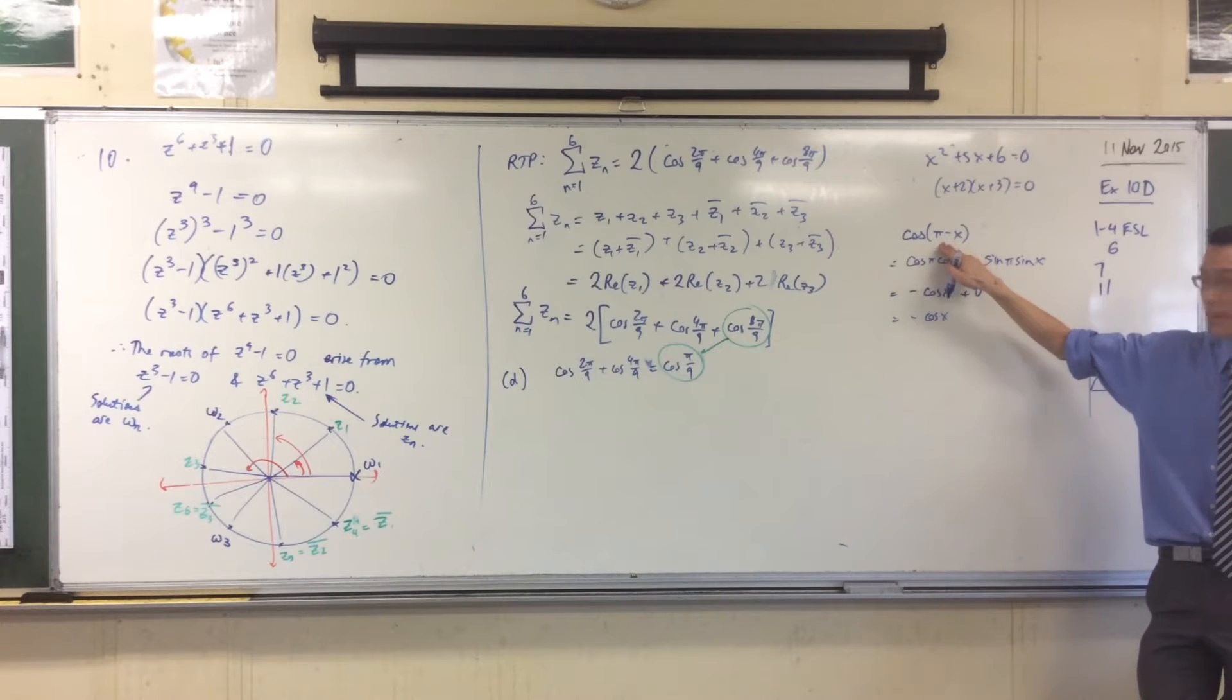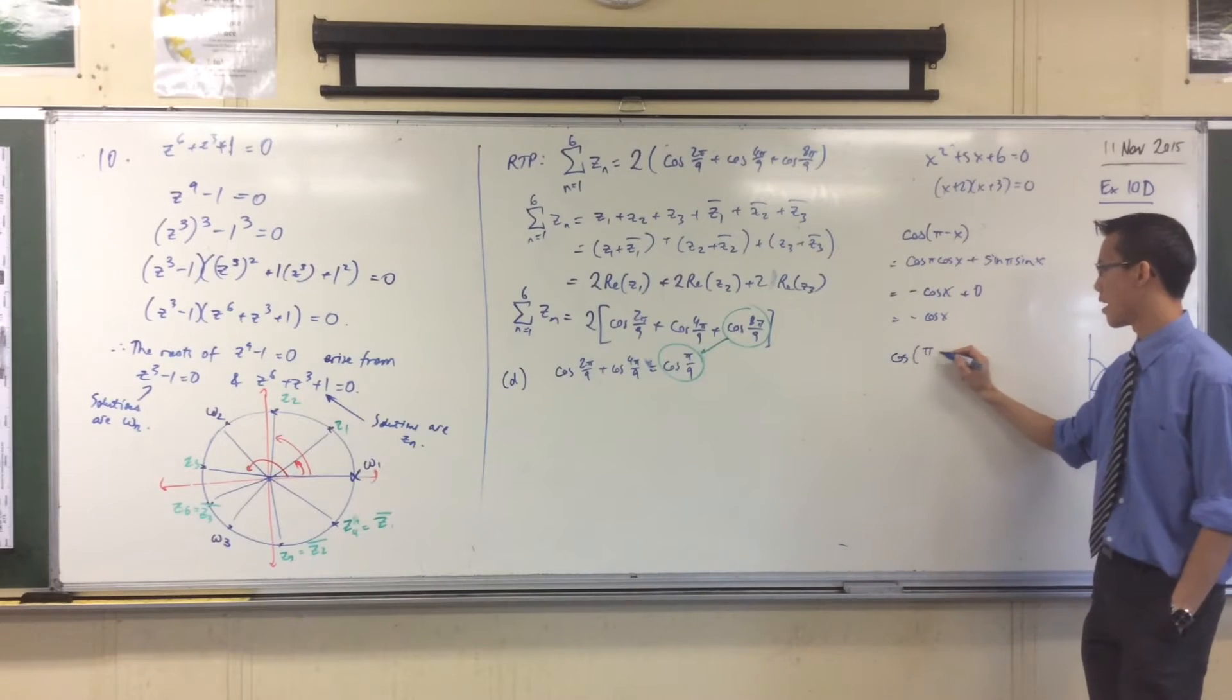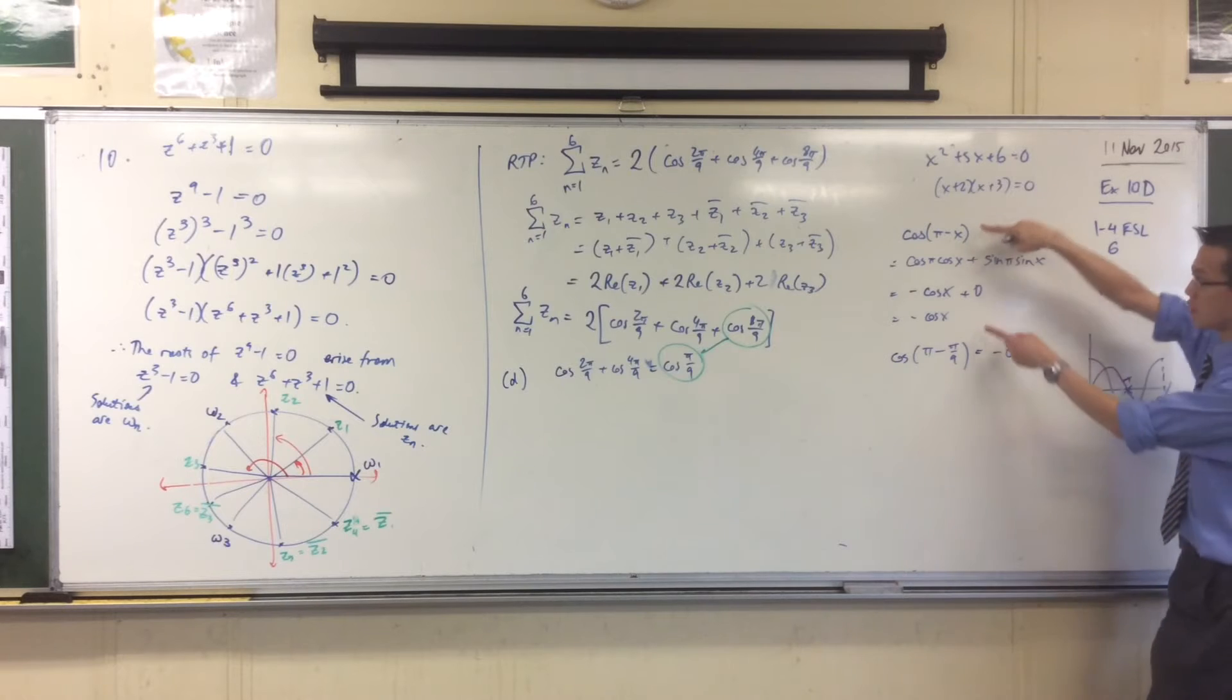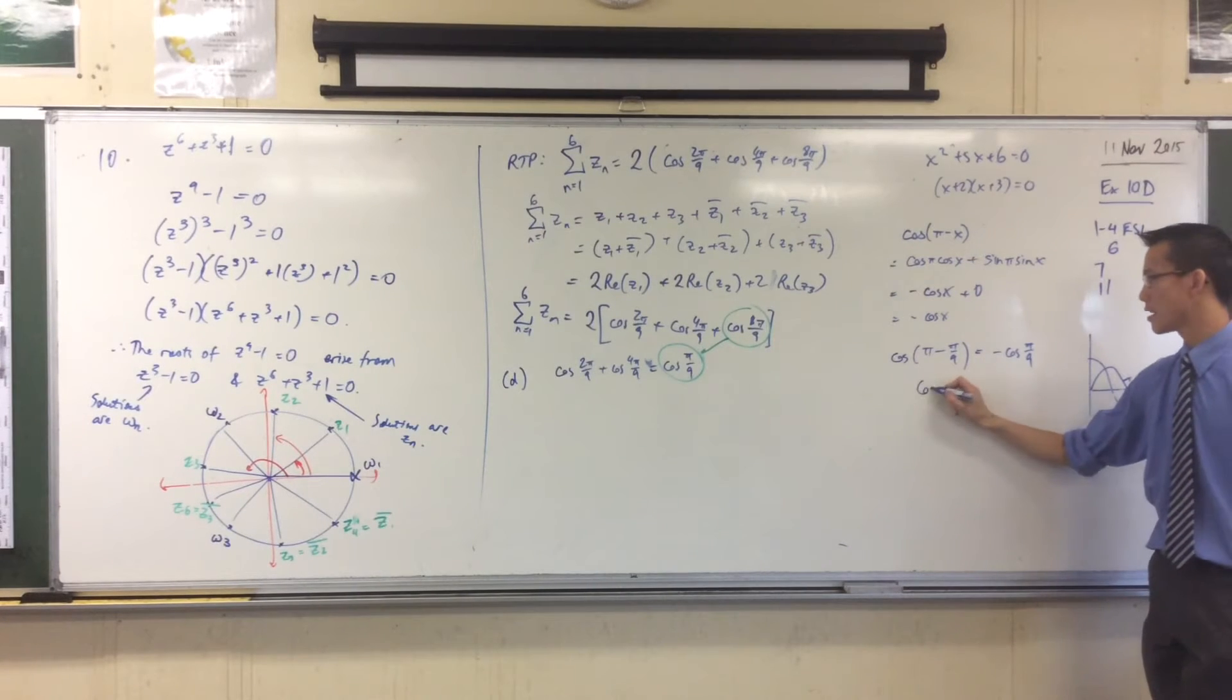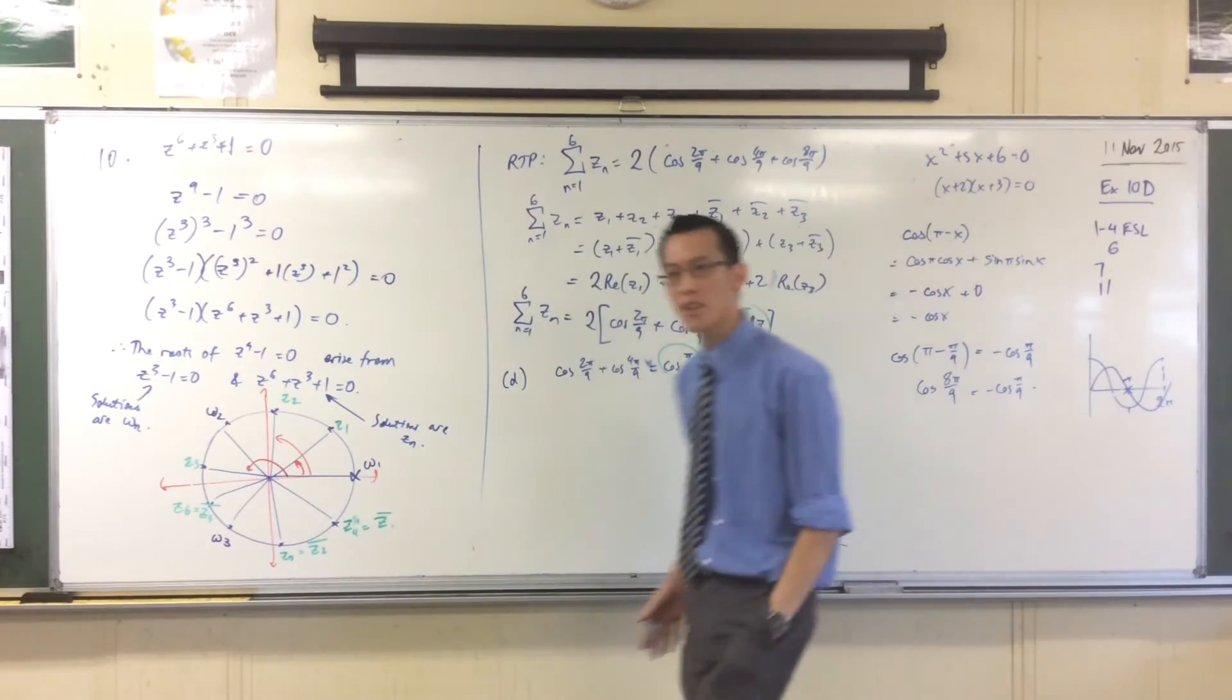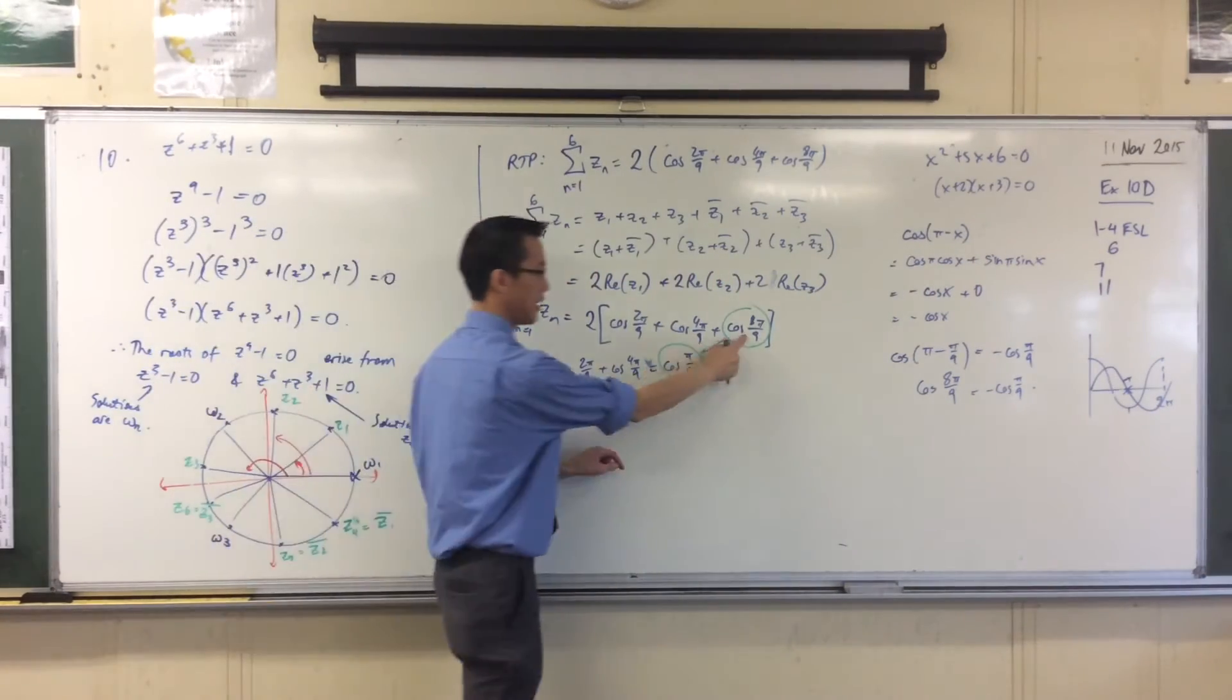So if I were to let X equal pi on 9 in this case, I would be able to say cos pi minus pi on 9, that's the supplement of pi on 9, is equal to minus cos pi on 9. Do you agree with that? That's just a straight substitution here. And this connects the two angles I'm after. There's cos 8 pi on 9 on the left hand side, and there's minus cos pi on 9 on the right. Just keep that in your back pocket. Now I have a path to get from here to here.